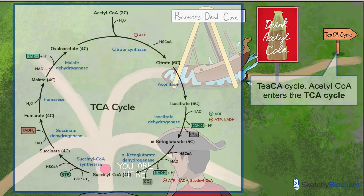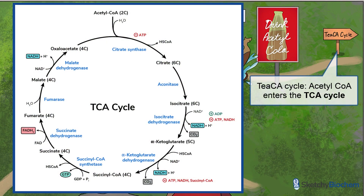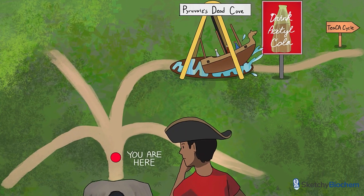Pyruvate's Dead Cove is located between Pyruvates of the Caribbean and the TCA ride because PDC is the transition step between glycolysis and the TCA cycle. Speaking of the TCA cycle, that's where acetyl-CoA enters. Please watch our PDC and TCA cycle sketches to learn more.